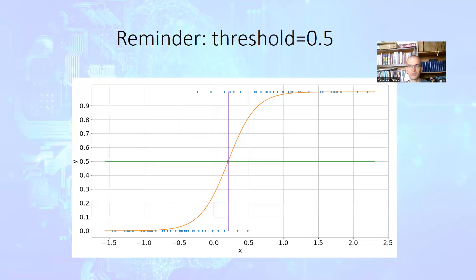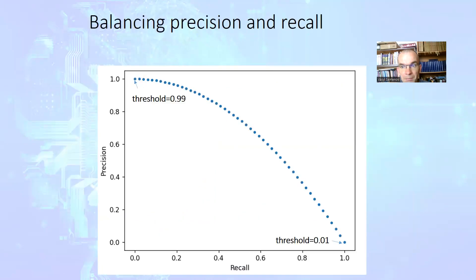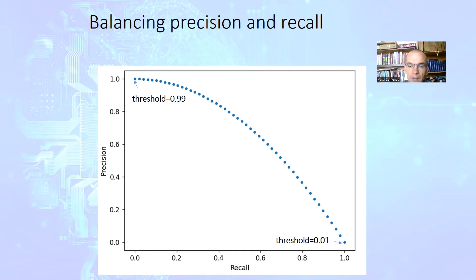Let us remind ourselves of the logistic regression curve. We classify our data by comparing the value of the sigmoid function with a threshold of 0.5. In some applications, we can consider other thresholds. For example, using a higher threshold will produce high precision and low recall. When we use a low threshold, we will have low precision and high recall. So we have to obtain some balance. We have an example of a precision-recall curve, constructed by considering different thresholds. For very high thresholds, we have high precision and low recall; for low thresholds, we have high recall and low precision.